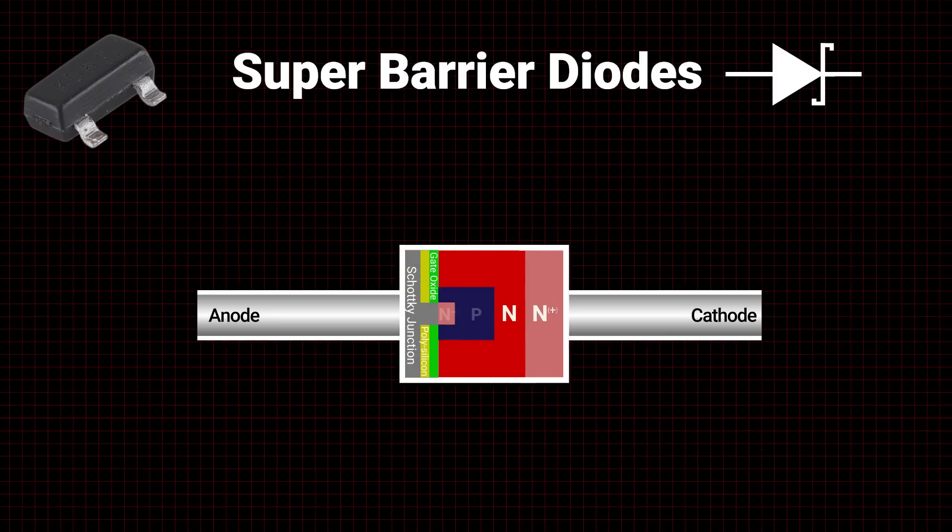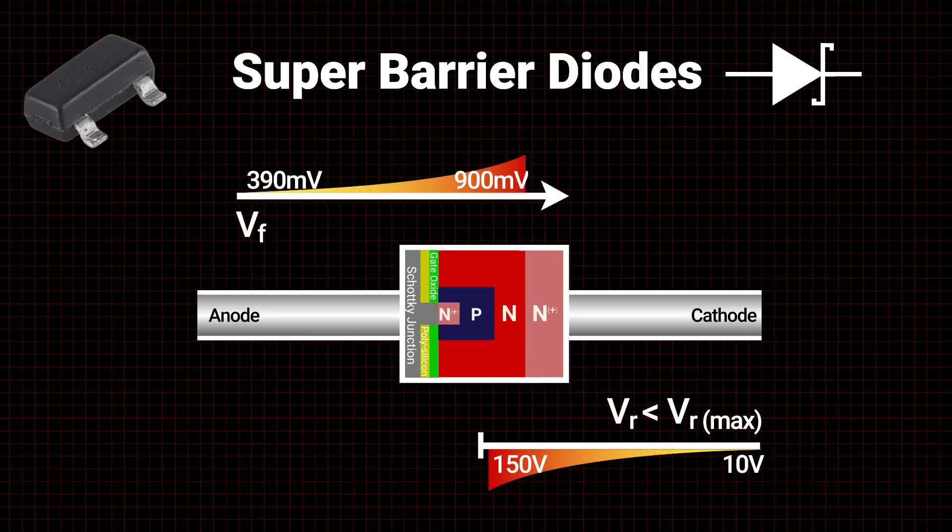Super barrier or SBR diodes are a proprietary term and design from Diodes Incorporated. These were created as an improvement to typical Schottky diodes by providing a lower forward voltage with low forward current. However, as forward current rises, the forward voltage has the potential to rise as well.